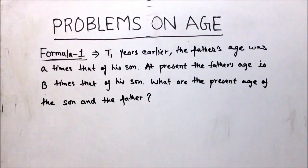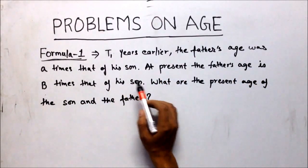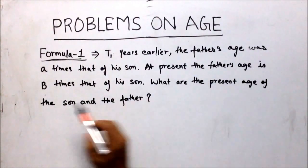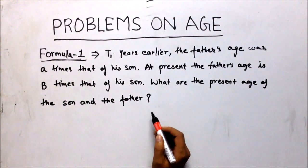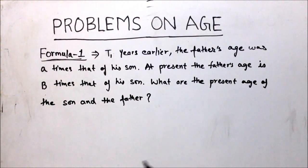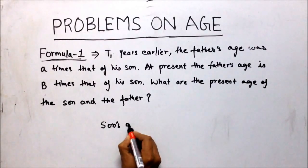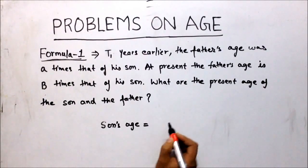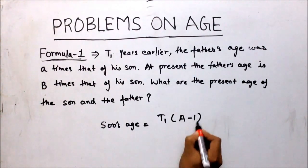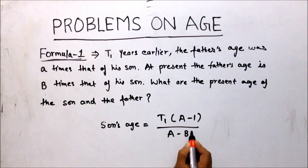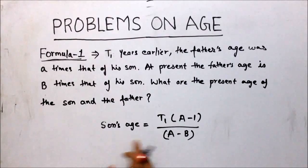Formula 1 to solve problems on ages: T1 years earlier, the father's age was A times that of his son. At present, the father's age is B times that of his son. What are the present ages of the son and father? To solve this type of question, we have a dedicated formula: son's age equals T1 times (A minus 1) upon (A minus B). For the father's age, just subtract the son's age from the total.